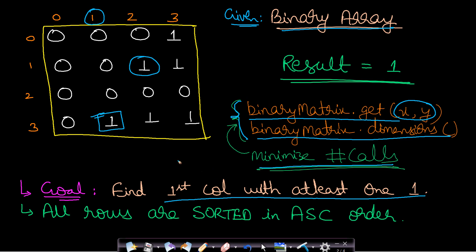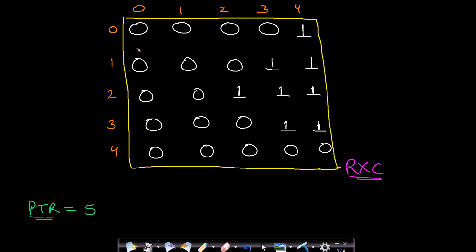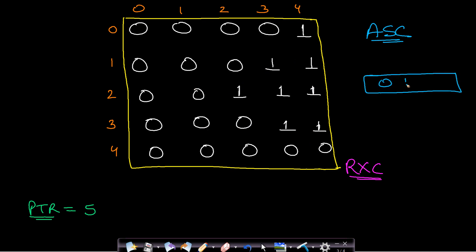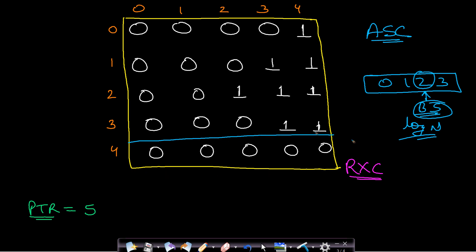Since all rows are sorted in ascending order, each 0 occurs before all 1s, meaning all 1s are on the right-hand side and all 0s on the left. We can make use of this ordering property. If you are given a single-dimensional sorted array, you can use binary search to find an element in O(log n) time. So we can treat each row as a sorted array and use binary search to find the leftmost occurrence of 1.